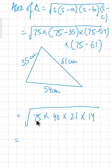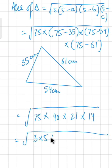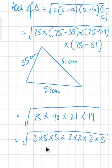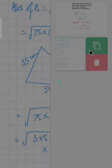The prime factors of 75 are 3 × 5 × 5. The prime factors of 40 are 2 × 2 × 2 × 5. The prime factors of 21 are 3 × 7, and the prime factors of 14 are 2 × 7.